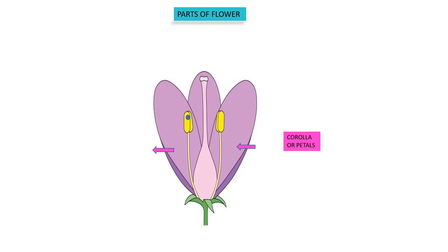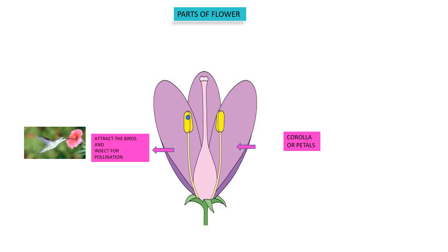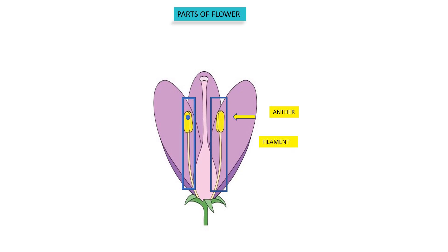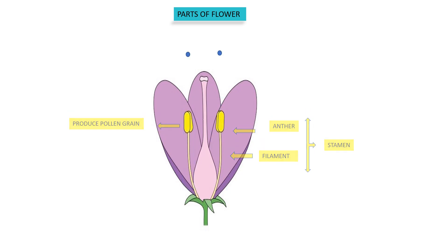It attracts the insects and birds for pollination. The third whorl is the male part of the flower. This wide lobe structure is called the anther, and this cylindrical part is called the filament. Collectively, the anther and filament are called the stamen. The set of stamens is called the androecium, and the anther helps in the production of pollen grains, which are the male sex cells.